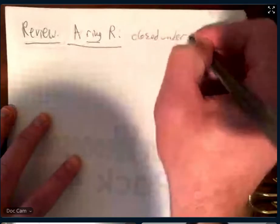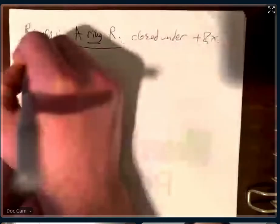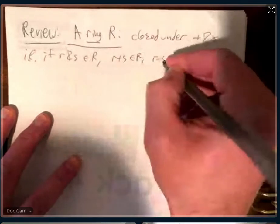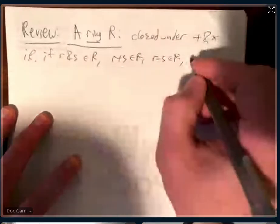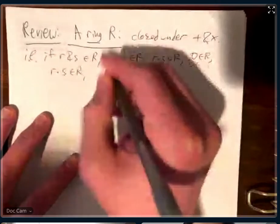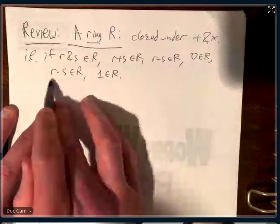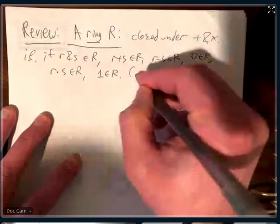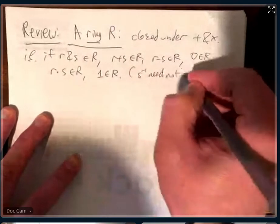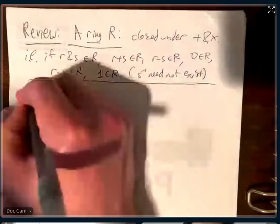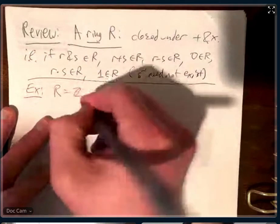Yes — closed under addition and multiplication. So if r and s are in the ring, then r+s is in the ring. It's a group under addition, so there is a -s, zero is in the ring, and r×s is in the ring. All of our rings will have unity, so there's an element 1 in the ring. The only thing we don't have is inverses — s⁻¹ need not exist.